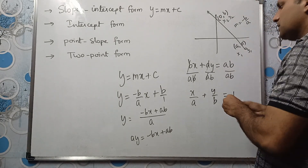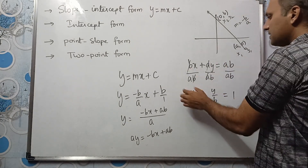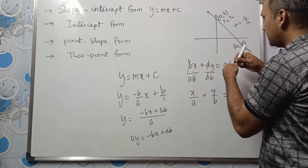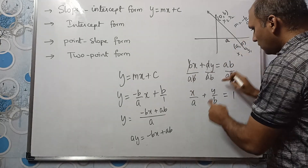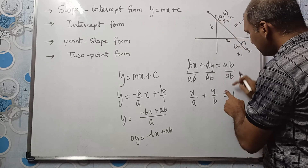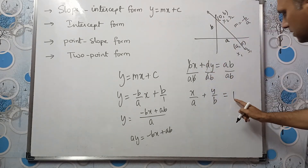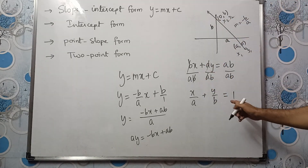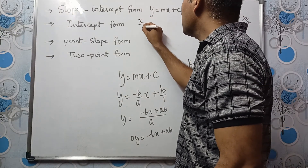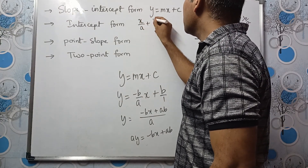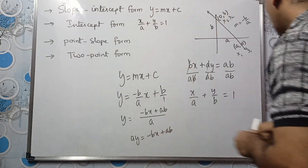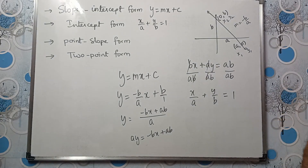Remember: x divided by x-intercept plus y divided by y-intercept equals 1. The intercept form is x/a + y/b = 1.